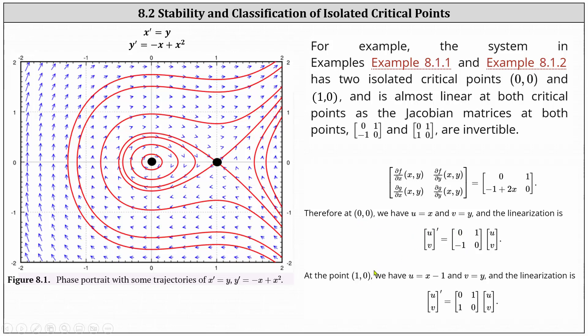Similarly, at the critical point one comma zero, the two by two Jacobian matrix has entries zero, one, one, zero, which is also invertible, indicating the system is also almost linear at the point one comma zero.